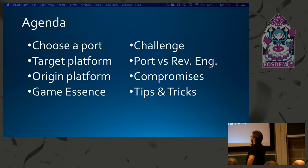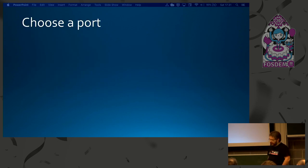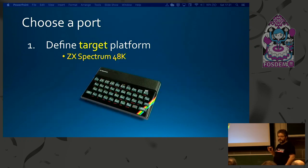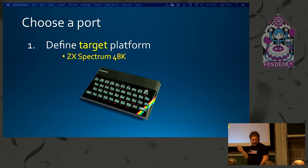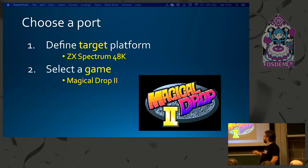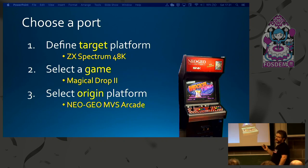We are going to cover these topics — I will go one by one, there are several slides for each. So, how do you choose a port? The first thing you need to decide is what's your target platform. In this case, I chose ZX Spectrum 48k — it could be anything else. Then you need to select a game, probably something you like to play.